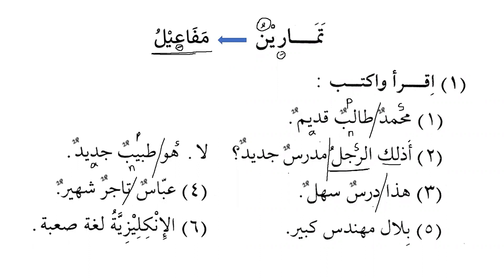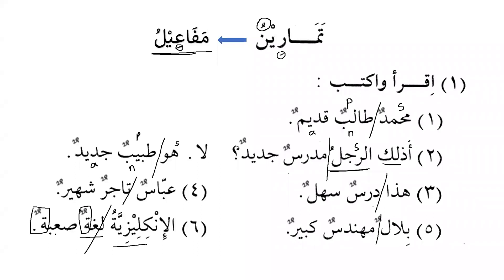Similarly: 'Bilalun muhandisun kabirun' — Bilal is a big engineer. Then: 'Al-inkliziyyatu lughatun sa'batun' — English is a difficult language. Al-inkliziyyatu has ta' marbuta so it is feminine, and that is why the khabar is also feminine. The noun lughatun is feminine, and therefore the adjective must also be feminine. This shows that masuf and sifa must be equal in all four properties: capacity, gender, number, and status.